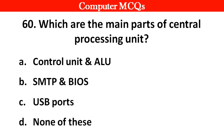Next question: Which are the main parts of the central processing unit? Options A. Control unit and ALU, B. SMTP and BIOS, C. USB ports, D. None of these. Right answer is option A: Control unit and ALU.